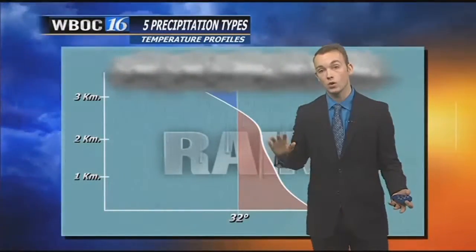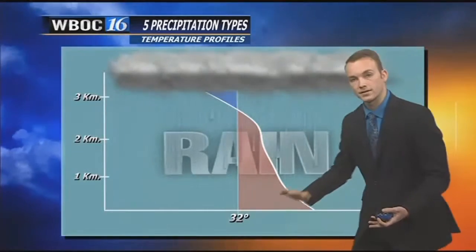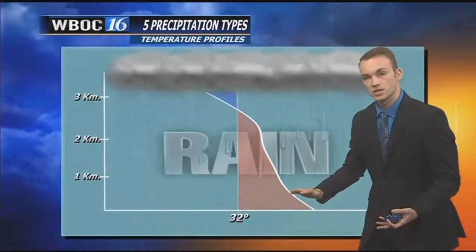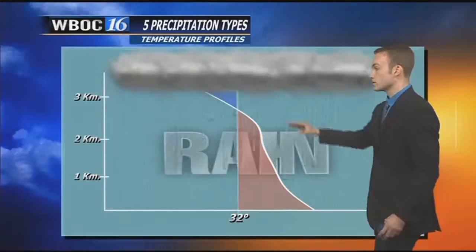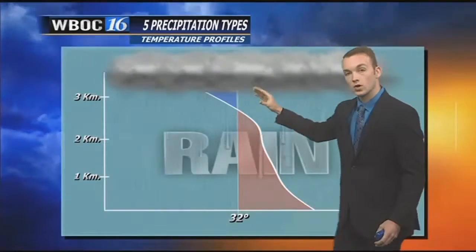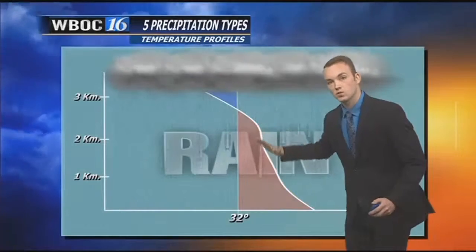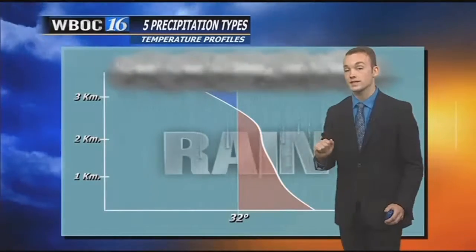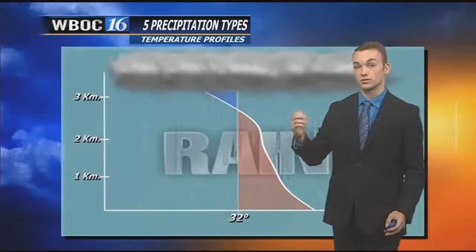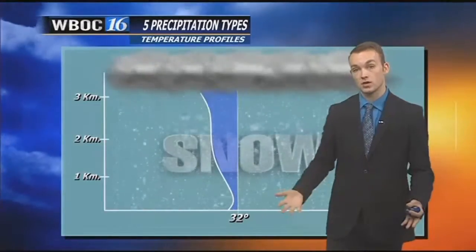It all has to deal with the temperature from the cloud layer all the way down to the surface. So when you're looking at a temperature profile for rain, you're going to start out a little cold at the immediate cloud layer, and it warms up. Then you're going to see temperatures above freezing all the way down to the surface, resulting in that liquid precipitation.